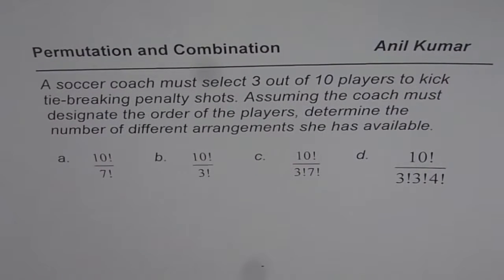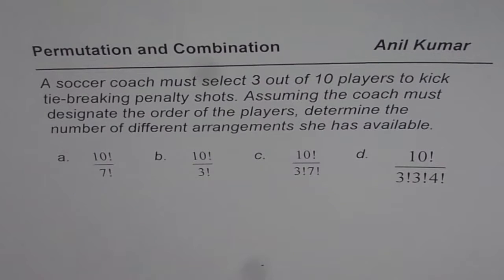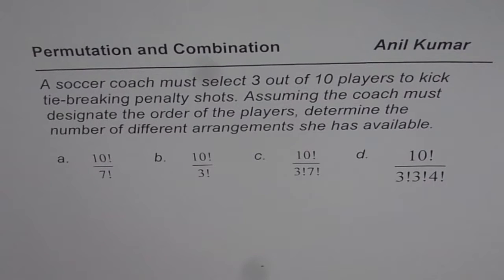I am Anil Kumar, and here is another multiple choice question on permutation and combination for you to practice. A soccer coach must select 3 out of 10 players to kick tie-breaking penalty shots. Assuming the coach must designate the order of the players, determine the number of different arrangements she has available. You have four different choices — you can pause and select the right one.